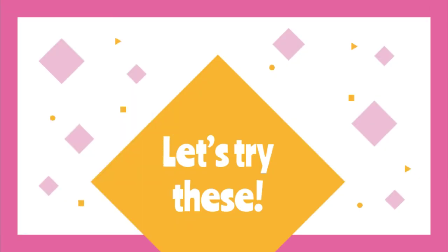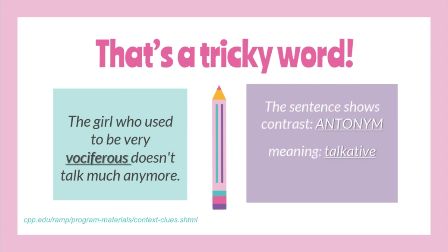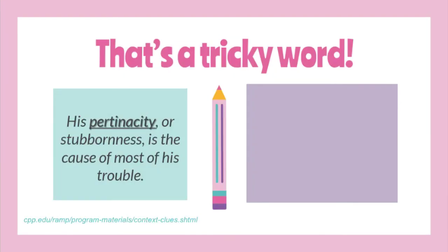Now you have an idea on how to decode the meaning of difficult words — it is your turn. Let's try this: 'The girl who used to be very vociferous doesn't talk much anymore.' The sentence shows contrast, so it is an antonym clue, and vociferous means talkative. Next: 'His pertinacity, or stubbornness, is the cause of most of his trouble.' The signal word 'or' signifies that pertinacity and stubbornness are synonyms.